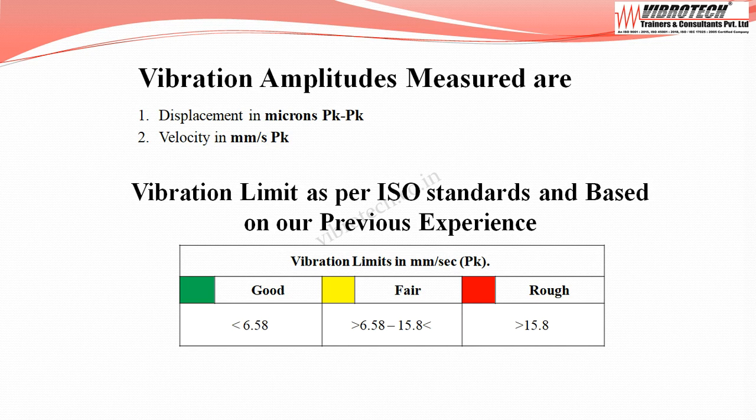As per ISO standard and our previous experience, the vibration limits are as follows: when the velocity falls below 6.58 mm per second peak it is considered good; between 6.58 to 15.8 mm per second peak it is considered fair; and above 15.8 mm per second peak it is considered rough.